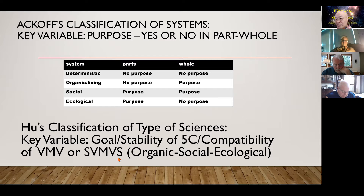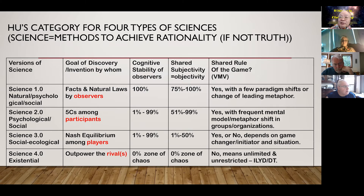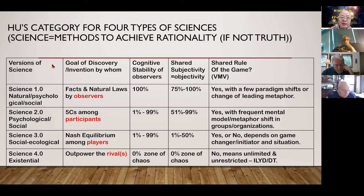My proposal is to use goal and the stability of 5C — or compatibility of value, mission, vision, or situation: value, mission, strategy — use this group of variables to do the classification. This is the main course: a table of versions of science.